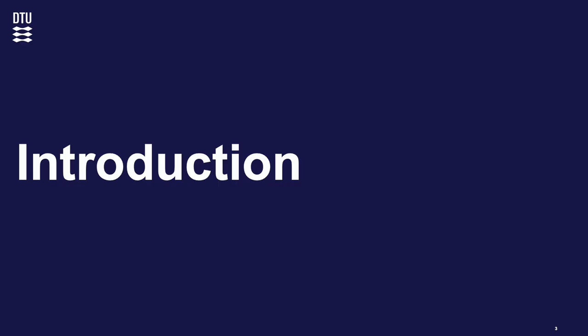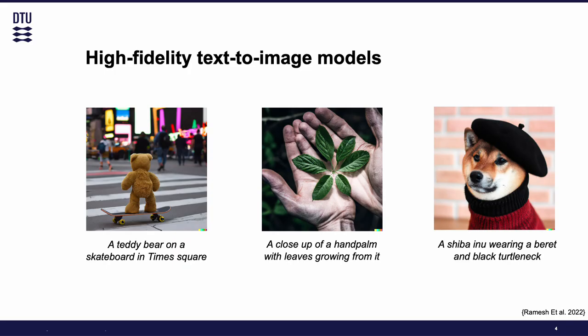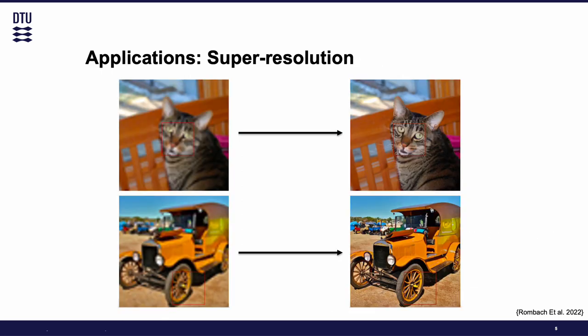So let's dive in with the first topic: introduction. Text-based image generation models have reached a point of maturity where they are capable of generating high fidelity photorealistic images. These images have attained a degree of quality that renders them suitable for practical implementations and that can often be confused with real photographs by the majority of observers.